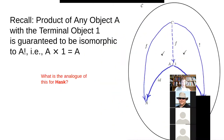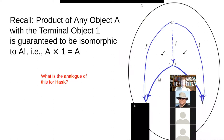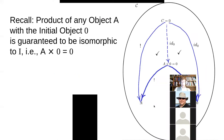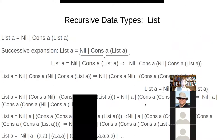You'll recall that we said the product of any object with a terminal object in an arbitrary category is isomorphic to A itself. And the co-product of any object with an initial object is isomorphic to that object. The product with zero is isomorphic to zero.